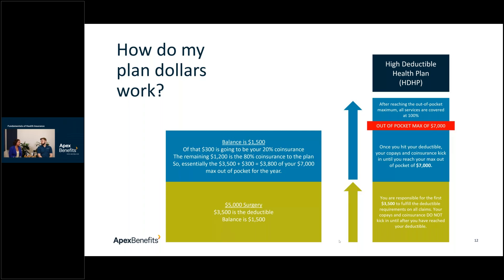These can be confusing, and unless something major happens you may not see all of these costs on the HDHP. So why would you want a plan where you're paying $7,000 out of pocket compared to $3,000? That's a great question — how do you know what plan is right for you?